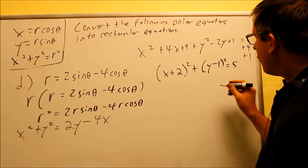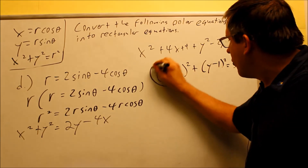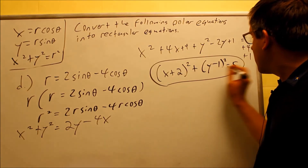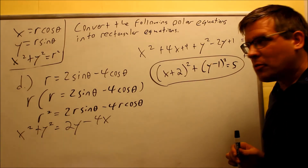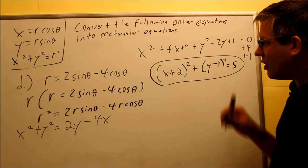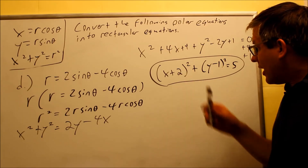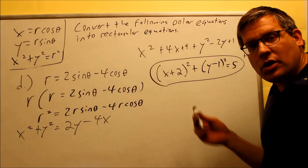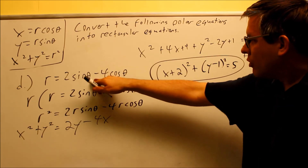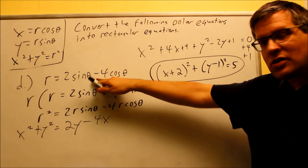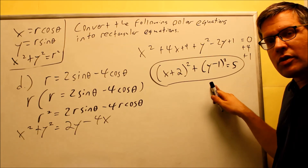That equals 5 when you add everything on the right side. So this is probably what you'll see as a multiple choice answer, written in this standard circle form. This is a circle centered at (negative 2, positive 1) with radius square root of 5. So this polar equation corresponds exactly to that circle in rectangular form.